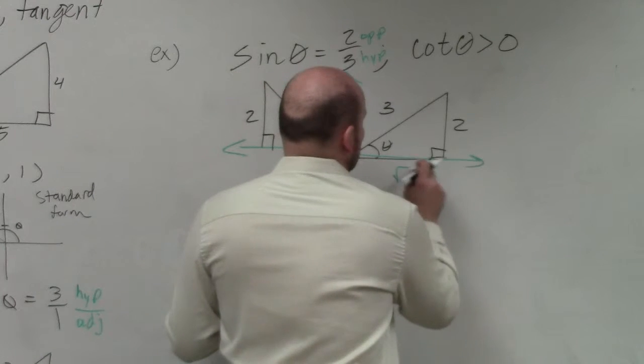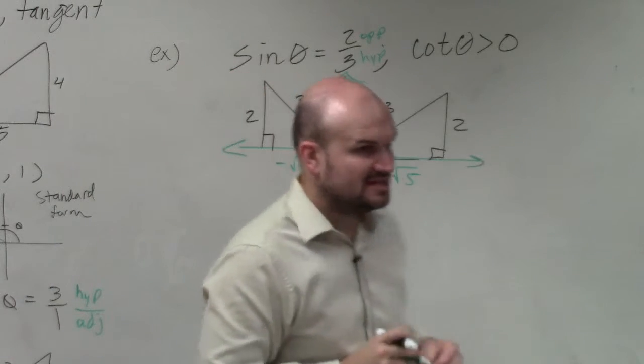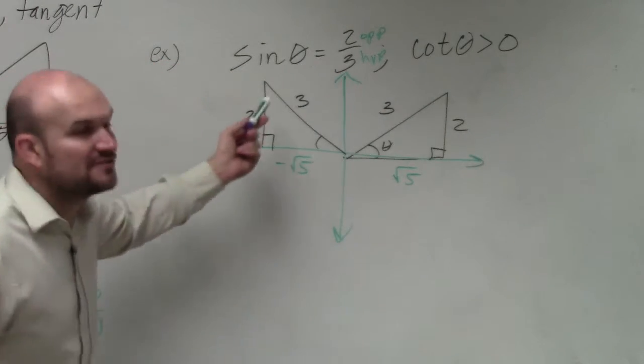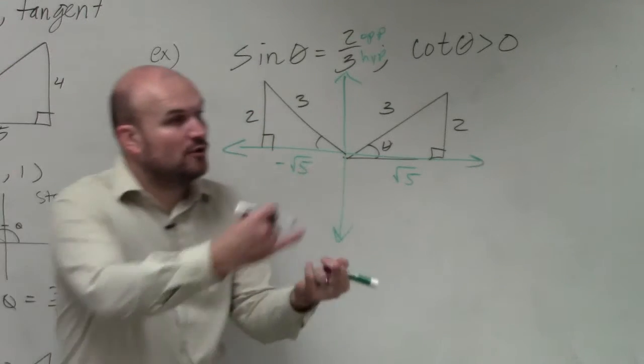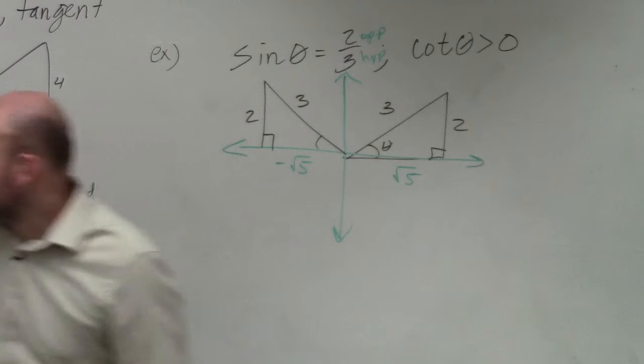So the difference, though, is square root of 5, negative square root of 5. Do you guys see how now it makes a huge difference? It doesn't make a difference for sine. It makes a difference for cosine and tangent, right? Because look it, guys.